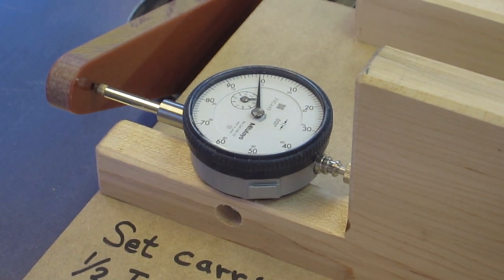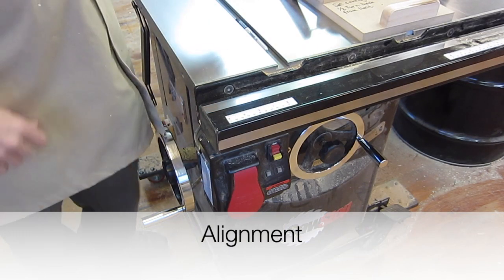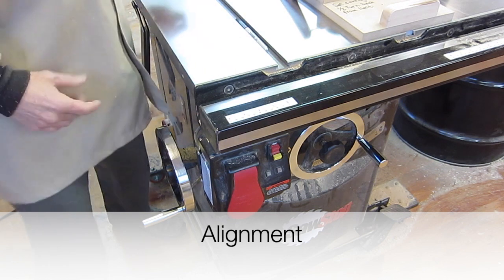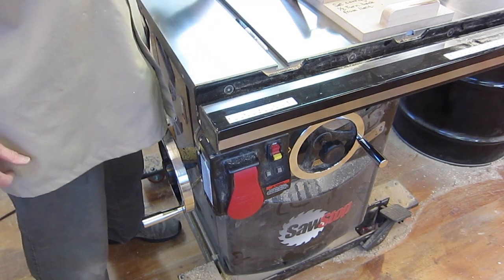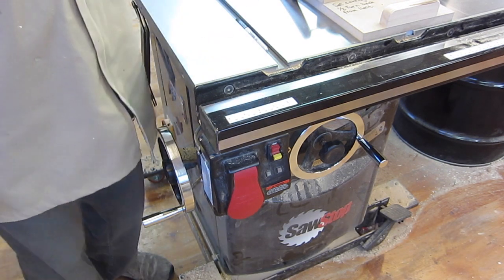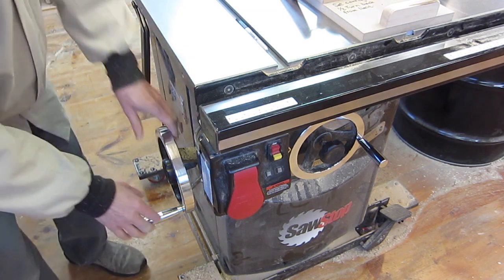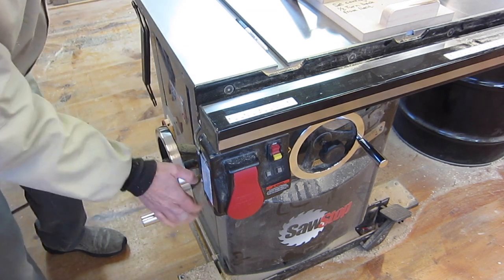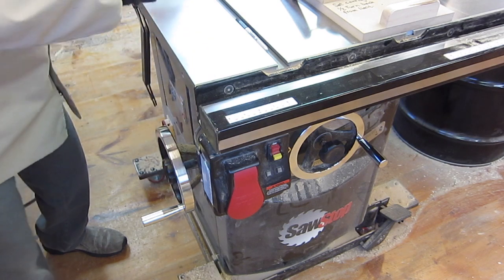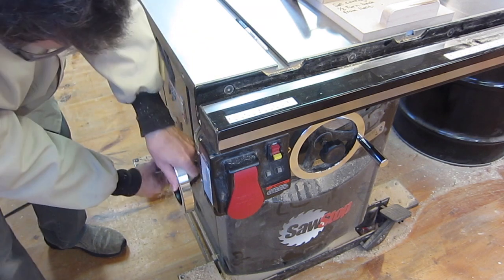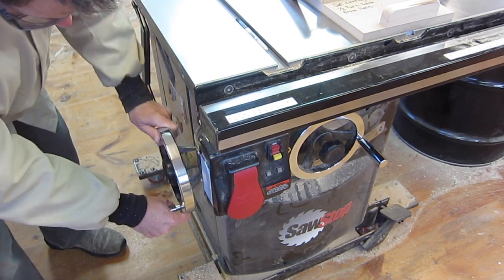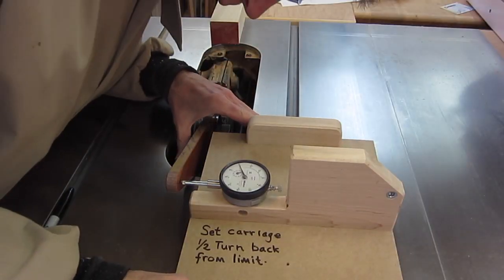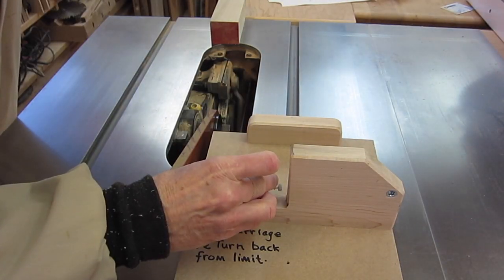The first test I'll do is alignment with the blade at 90 degrees and at maximum height or within one turn of maximum height. And for 90 degrees, you don't want to jam the handle up here because again, that can distort the carriage. You just want to come in gently. I've got the point on the black dot. I'll set the dial to zero.